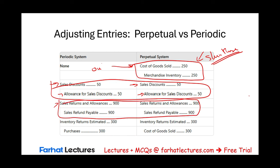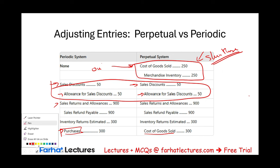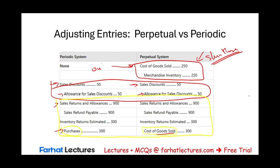The only difference in adjusting entries is that under a periodic system, for an estimated return we adjust Purchases rather than cost of goods sold directly, since Purchases eventually adjusts cost of goods sold. Now let's go through the closing process for the periodic system.